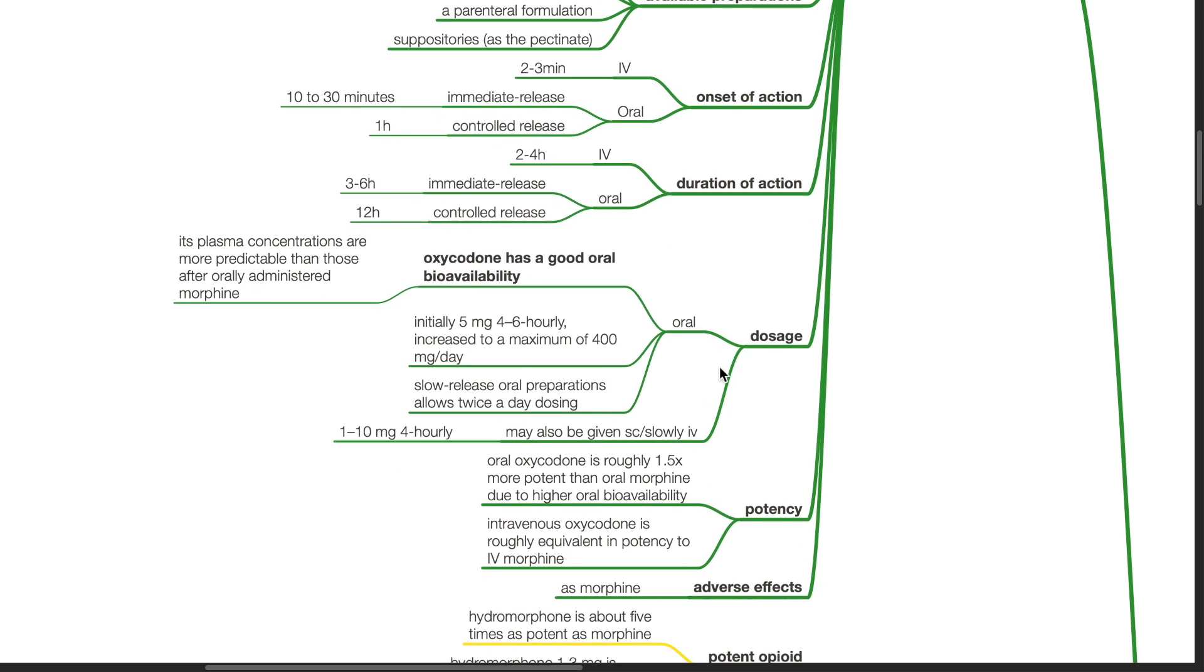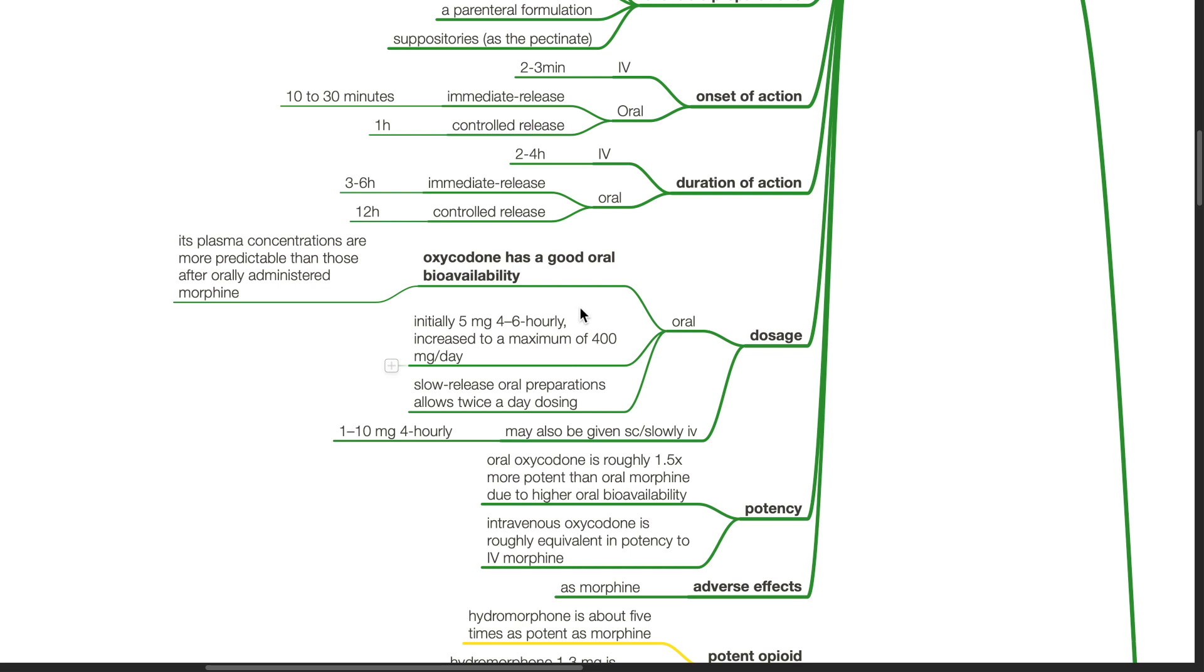Dosage. Oxycodone has good oral bioavailability. Its plasma concentrations are more predictable than those after orally administered morphine. The dose is initially 5mg 4 to 6 hourly, increased to a maximum of 400mg per day. Slow-release oral preparations allow twice-a-day dosing. Oxycodone may also be given subcutaneously or IV, 1 to 10mg 4-hourly.